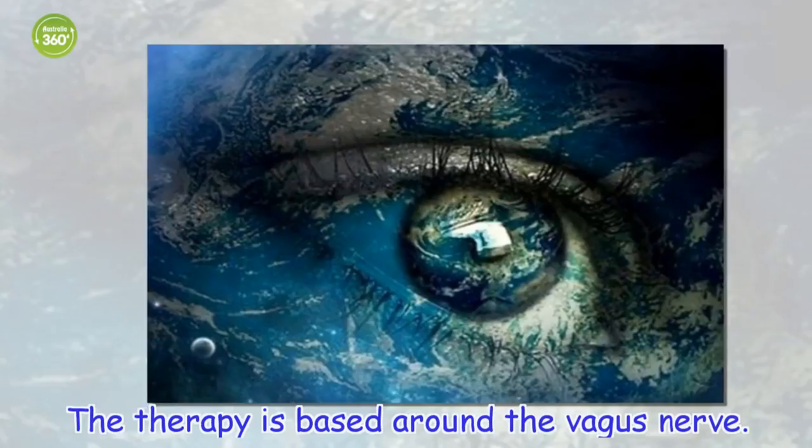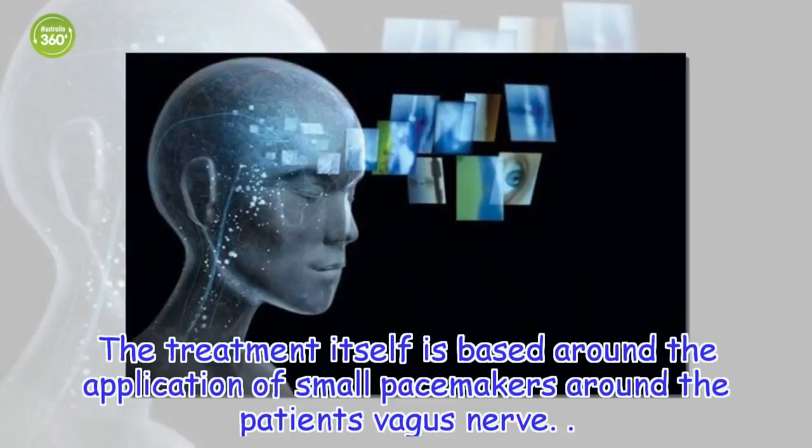The therapy is based around the vagus nerve. The treatment itself involves the application of small pacemakers around the patient's vagus nerve. Remember, the vagus nerve connects an infinite amount of nerves, organs and structures to our brain.